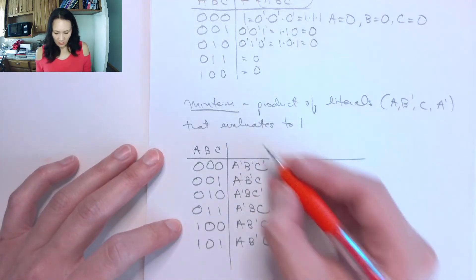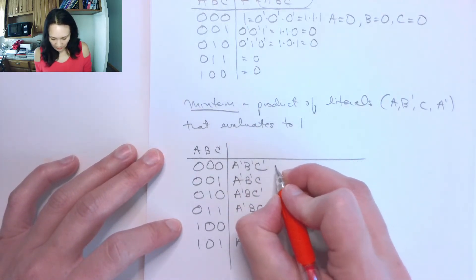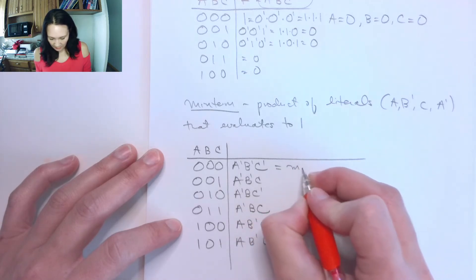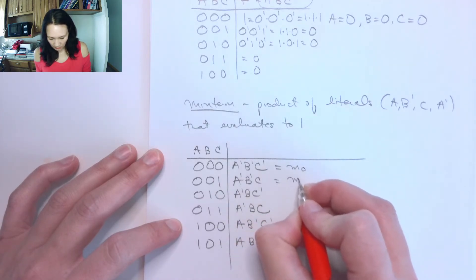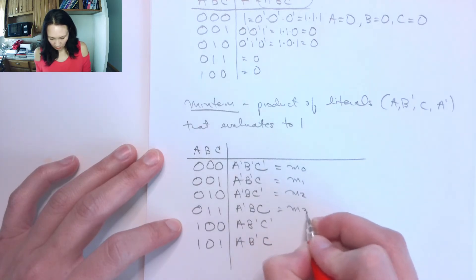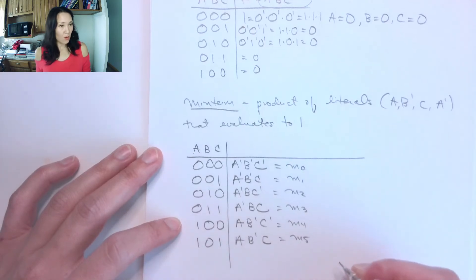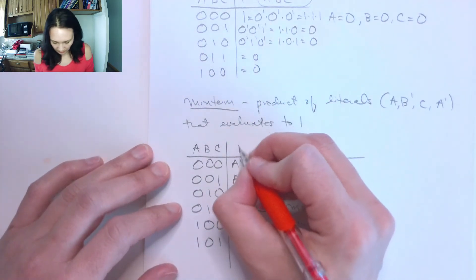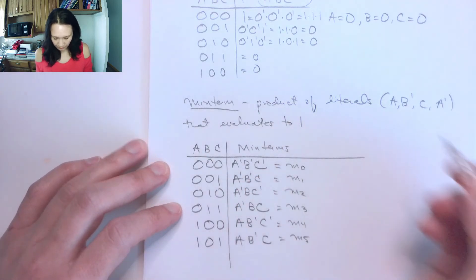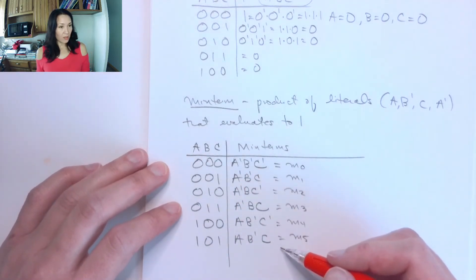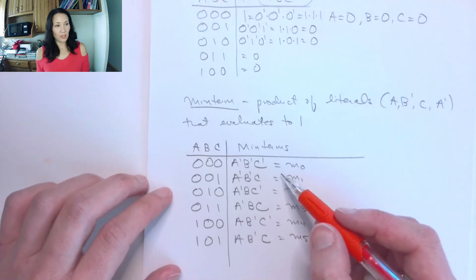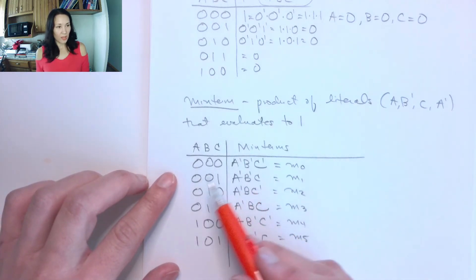So these are actually the minterms. And we can label these as this is minterm 0, this is minterm 1, this is minterm 2, this is minterm 3, 4, 5, and so on. So I'm going to put these as the minterms. And these are basically the function definitions that F would need to be in order to give us a 1 at each one of these particular cases.